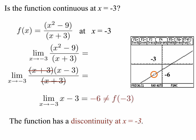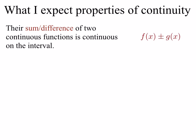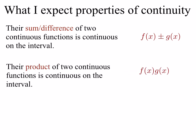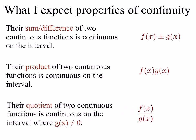Now let's consider some properties of continuity. If we add or subtract two continuous functions, the sum or difference should also be continuous on the same interval. Similarly, the product of two continuous functions is continuous. And the quotient f of x over g of x should be continuous, provided there are no points in the interval where g of x equals 0.